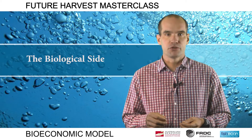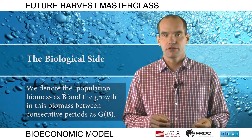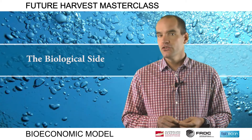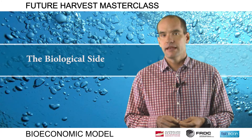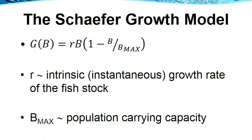Maintaining the same notation as in the previous module, we denote the population biomass as B and the growth in this biomass between consecutive periods as G. We usually assume a density-dependent growth relationship, implying that incremental growth in biomass slows at higher population densities. The Schaeffer Growth Model is commonly used. In this model, the periodic growth or surplus production is related to the biological carrying capacity of the fishery and the intrinsic growth rate. The population carrying capacity, B-max, is the finite upper bound on the size to which the population can grow. The intrinsic growth rate, R, represents the proportional rate at which the fish stock would grow when its size is small relative to the carrying capacity of the fishery.